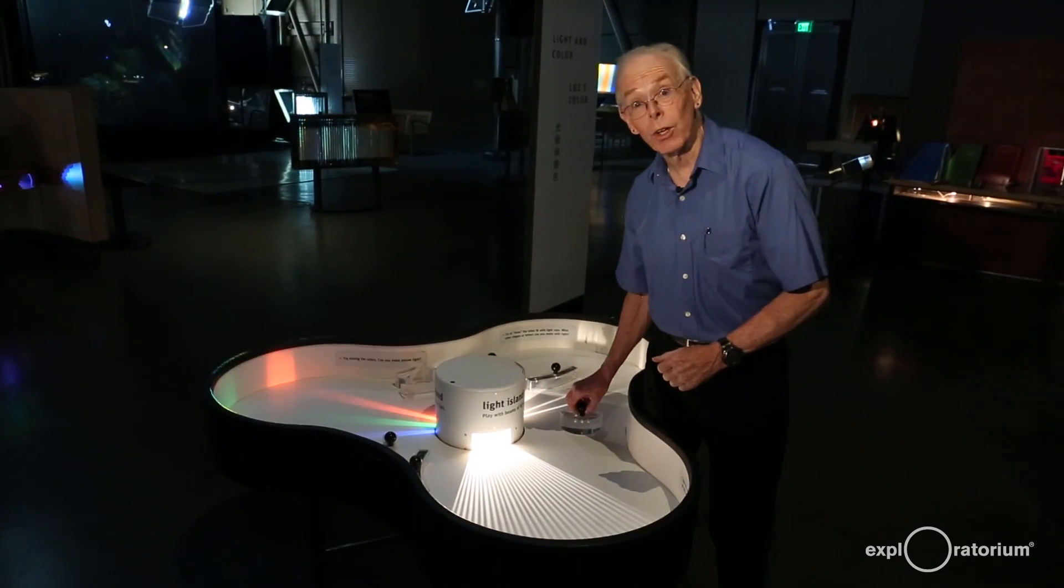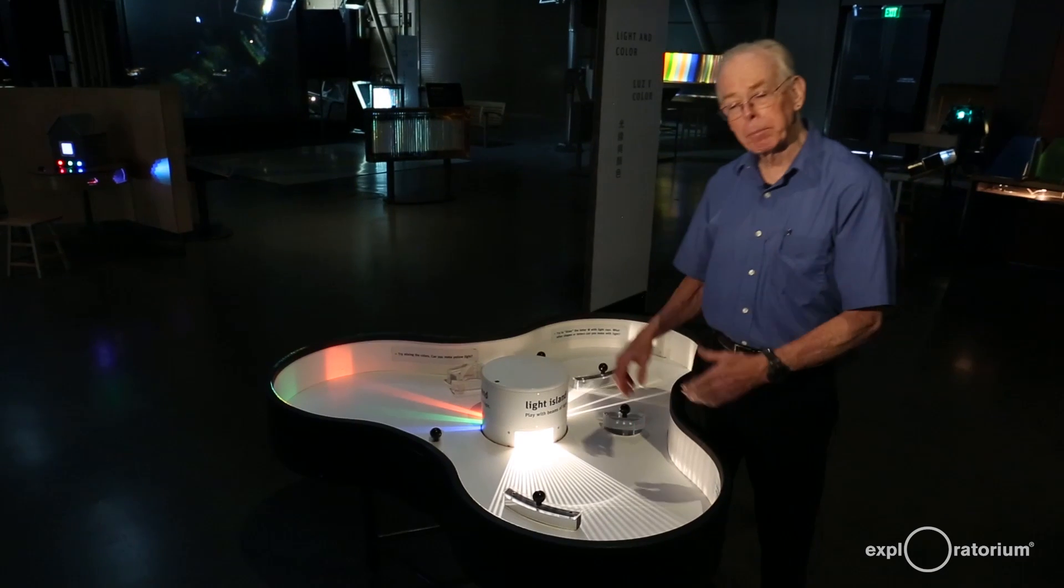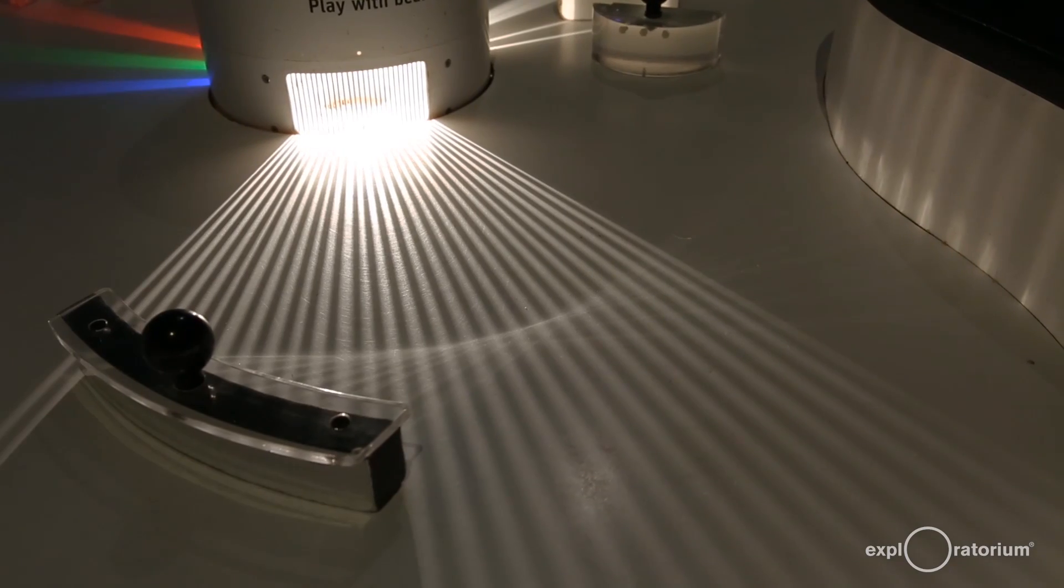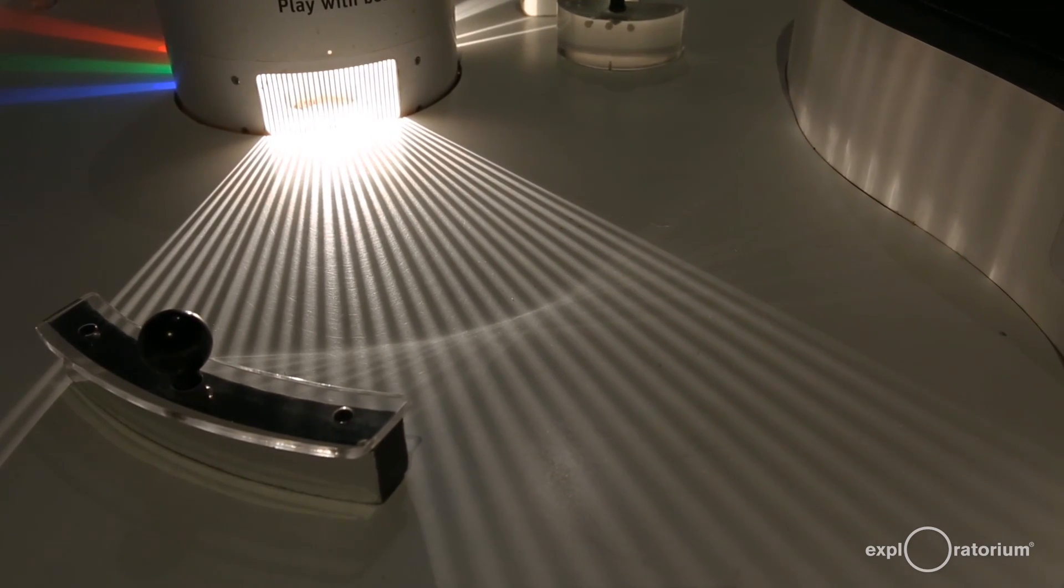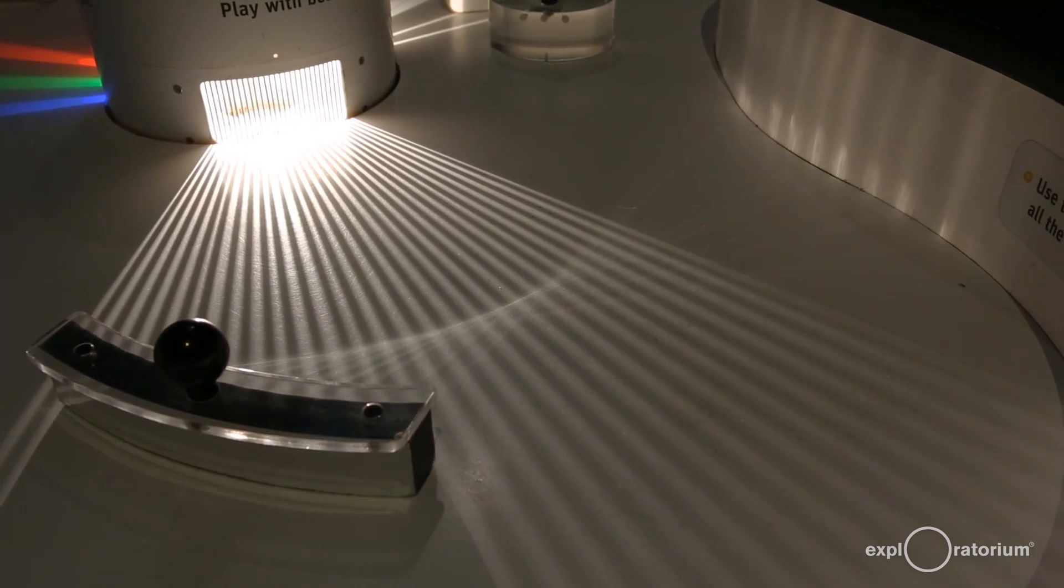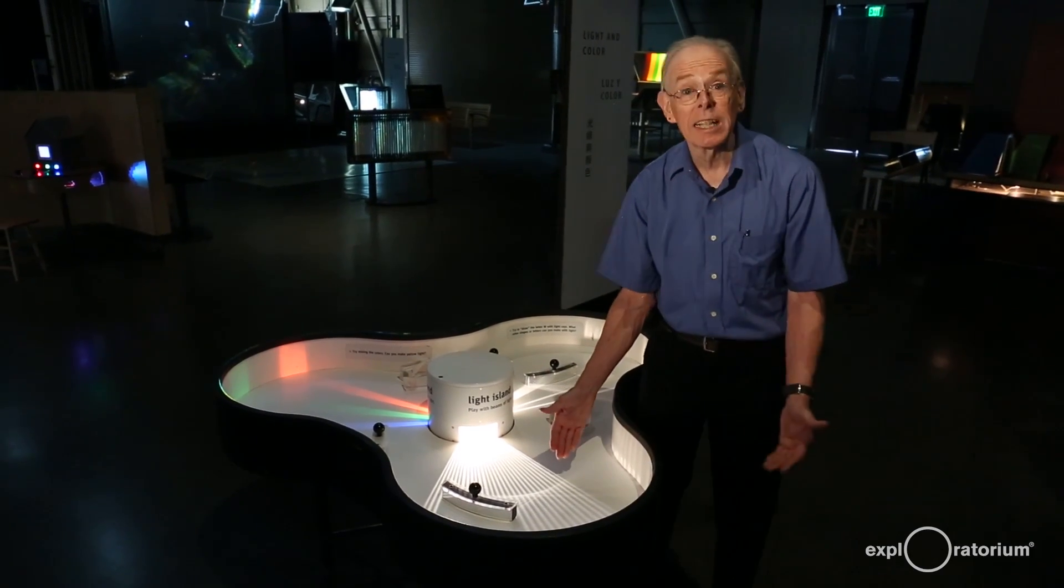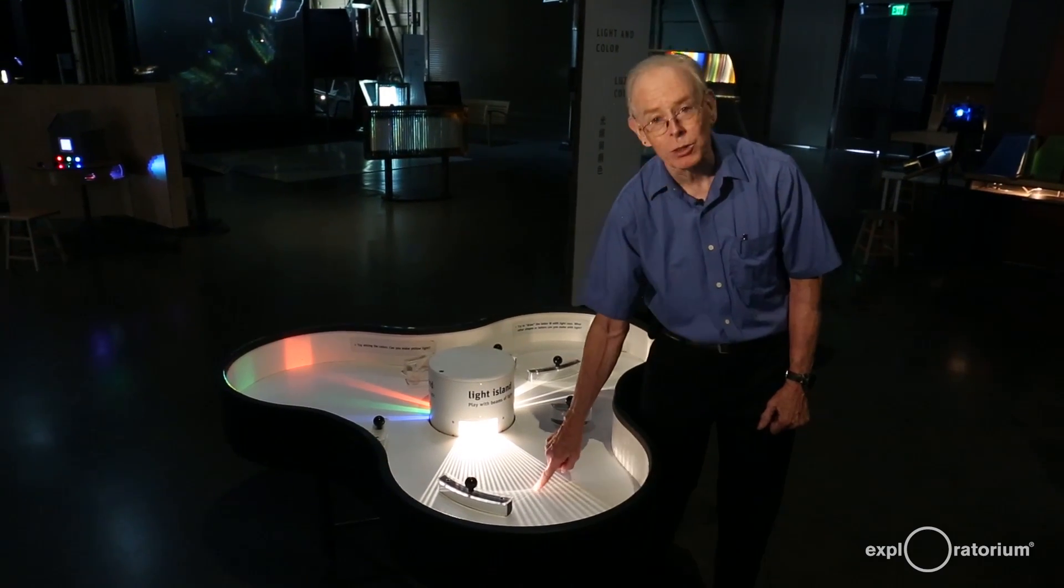I can also do that with a curved mirror. If I place a curved mirror in the spreading light beams, the light beams bounce off the curved mirror and come back together again, then spread out. If I put my eye in the spreading beams, I will see an image of the light bulb hanging in space right there.